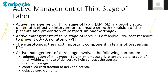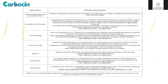Active management of third stage of labor can prevent atonic PPH in 60–70% of cases. The WHO recommendation is that active management of third stage should only be practiced by skilled providers. Oxytocin is currently the WHO drug of choice. A new drug, carbetocin, will be discussed at the end. Where there are no facilities to store oxytocin, misoprostol 600 micrograms orally is the drug of choice at the periphery.